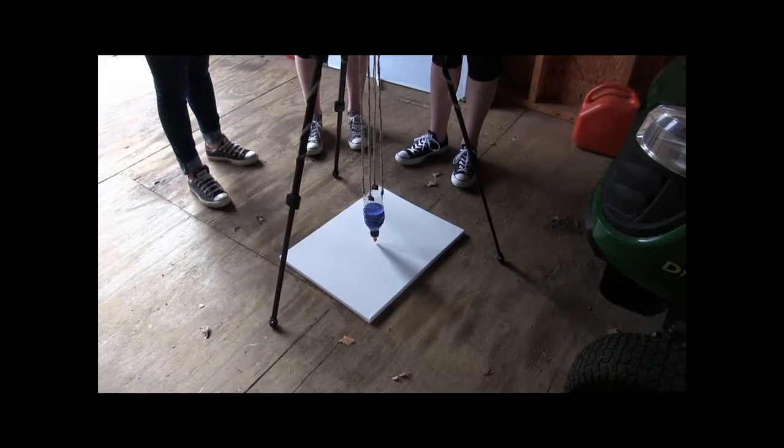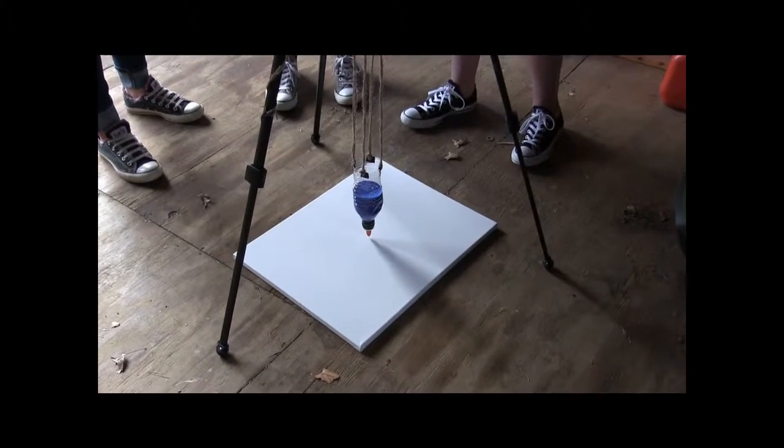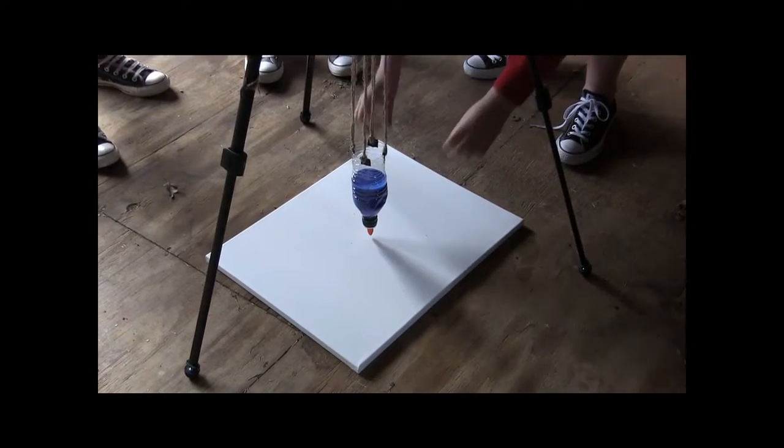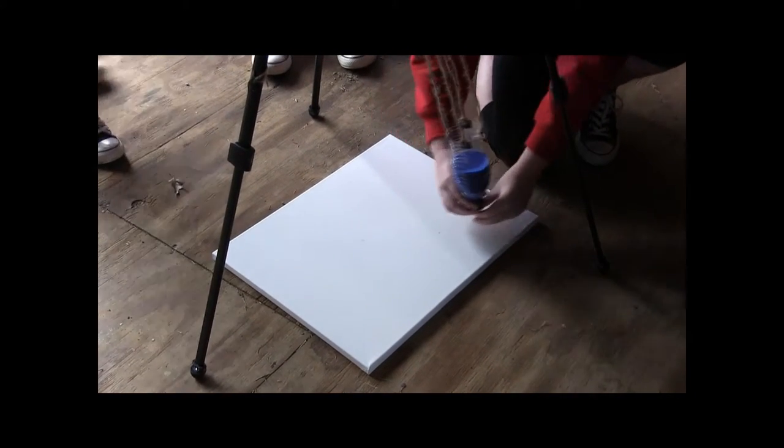A pendulum consists of a mass called a bob, which is the water bottle, attached to the twine. Simple harmonic motion occurs when the force brings the water bottle back to the original position. You gotta put it—no, don't open it there yet—yeah, there you go.